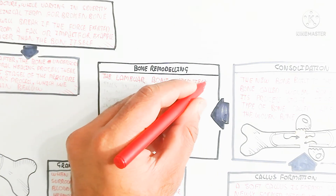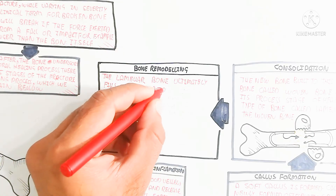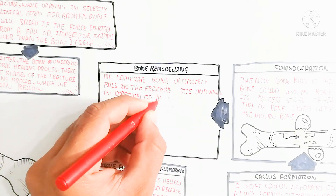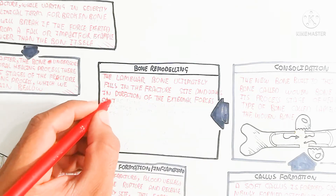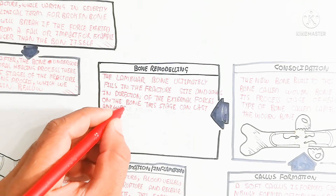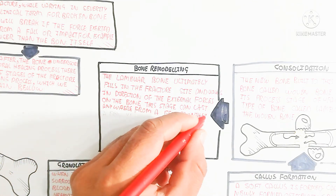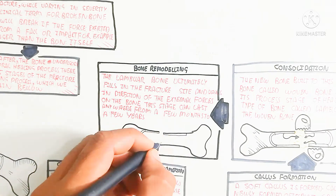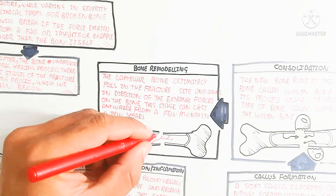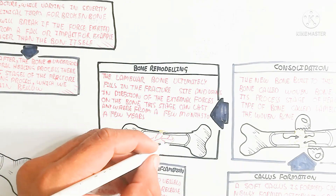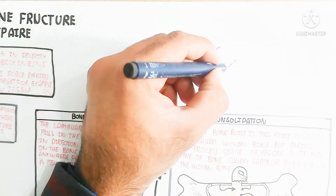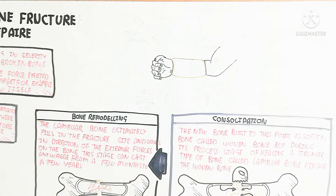The last stage is bone remodeling. The whole process requires four weeks to years, depending on the bone and age — if age is more, more time is required; if age is less, less time is required. The lamellar bone ultimately fills the fracture site and aligns in the direction of external forces on the bone. This stage can last from a few months to a few years.